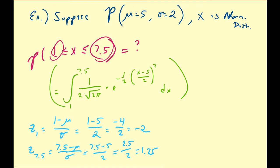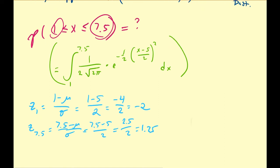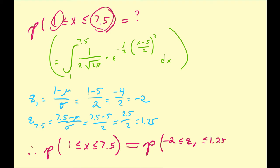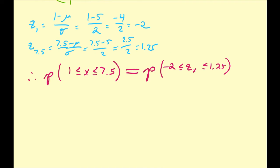We find the z-scores for the boundaries 1 and 7.5. The z-score for 1 is (1 − 5) / 2 = −4/2 = −2. The z-score for 7.5 is (7.5 − 5) / 2 = 2.5/2 = 1.25. So 1 is 2 standard deviations to the left of the mean, and 7.5 is 1.25 standard deviations to the right. That means P(1 ≤ x ≤ 7.5) = P(−2 ≤ z ≤ 1.25), which equals the integral from −2 to 1.25 of n(z) dz, abbreviated as the integral from −2 to 1.25 of n of z dz.